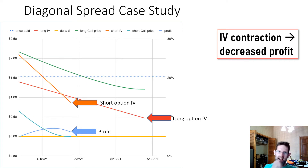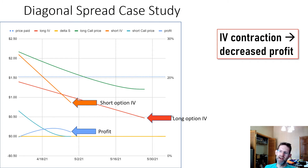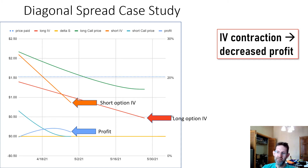It's almost impossible that IV would decline from these historically low levels. But if it did, the diagonal spread would lose value. However, I'd argue this is unlikely, since if IV contracted, the stock price would almost certainly rise, which would increase profitability. Conversely, if implied volatility increases, the profit would increase. This is the opposite of short option strategies like short strangles, where you actually want IV to contract after you enter the trade. So that's why for a time like this — when we've got a rapid drop in IV and you expect it to rise quickly — it's a good time for long option strategies like debit spreads and diagonal spreads.